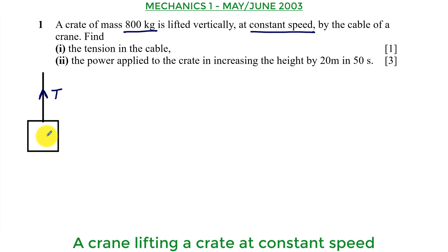The mass of this crate is 800 kg so we can calculate its weight. Remember the weight of an object is given by the mass in kilograms times the gravitational field strength in newtons per kilogram. So the mass is 800 kilograms. The gravitational field strength is 10 newtons per kilogram.